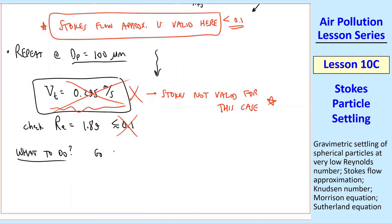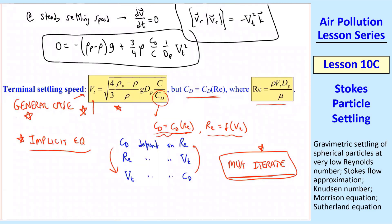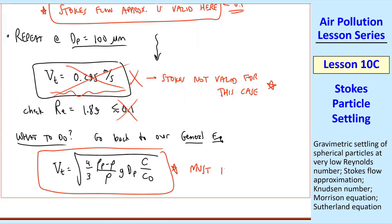So what to do? Well, we have to go back to our general equation. It was this equation up here, this general case equation with the square root. Unfortunately, we must iterate as I talked about previously, since this is an implicit equation. That's what I'll show you how to do next time.